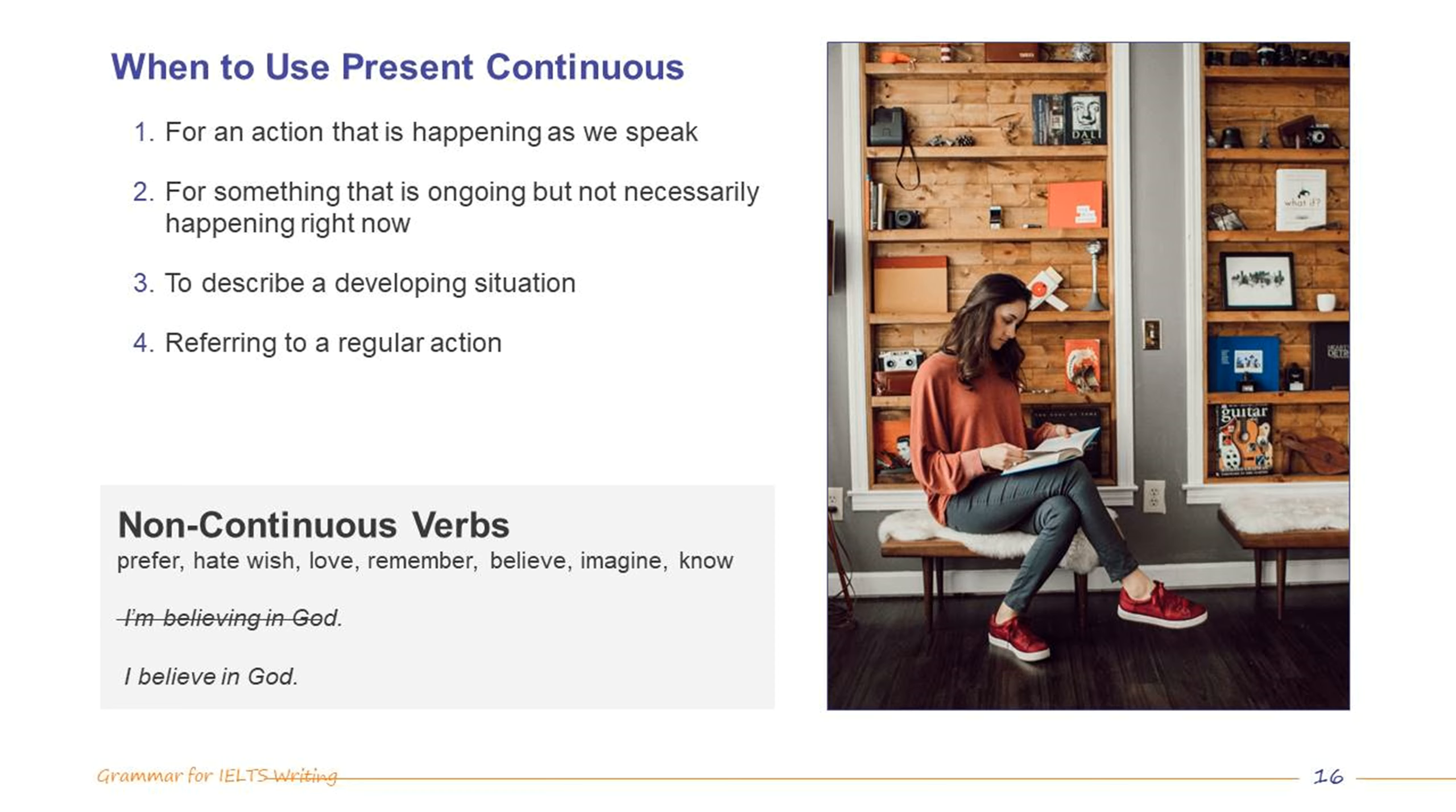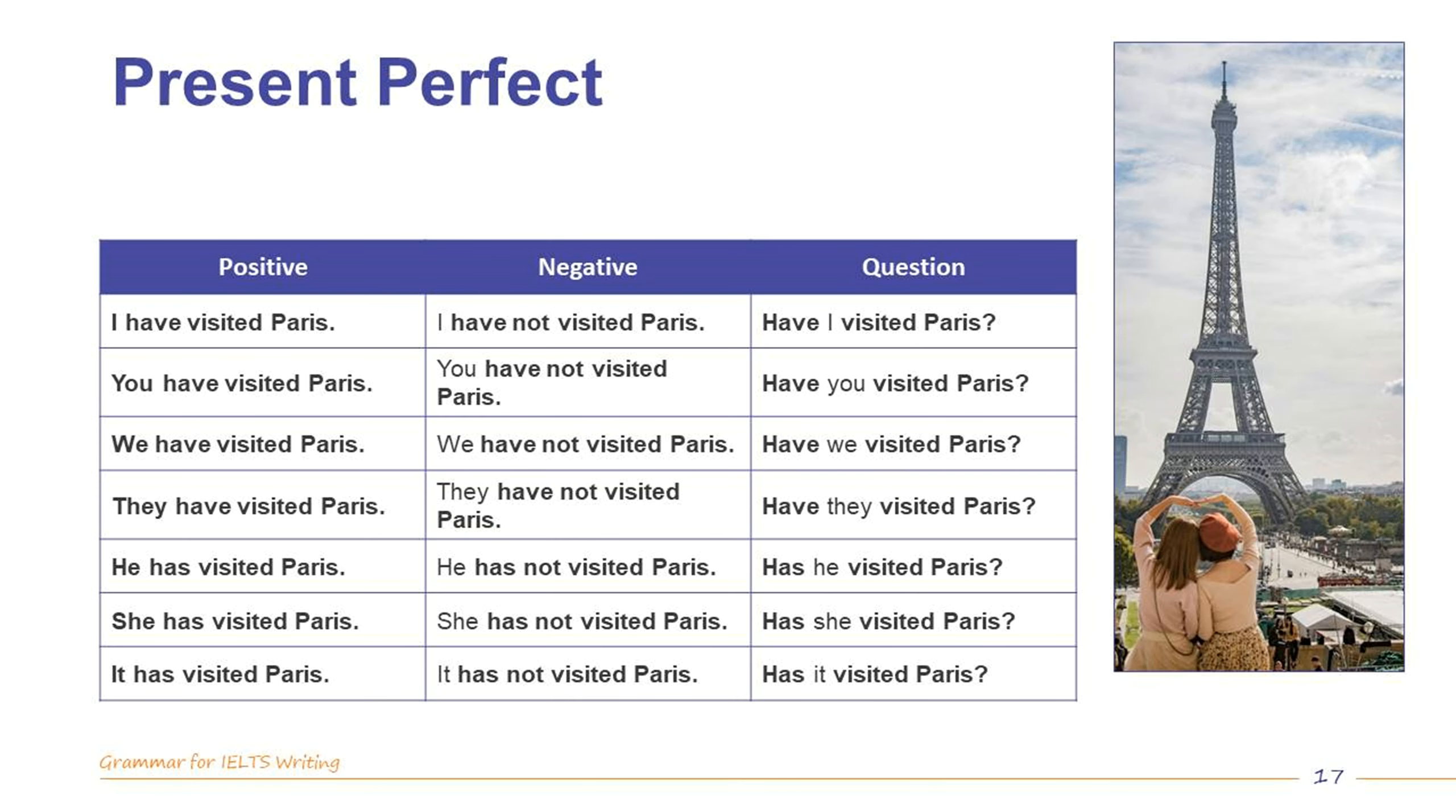It may sound like you can describe any action with the present continuous, but this isn't true. There are actually many non-continuous verbs. These are generally verbs that describe states or feelings, the sorts of things you can't really see someone do. They include prefer, hate, wish, love, remember, believe, imagine, know. For example, a person might say I believe in God. However, they can't say I'm believing in God.